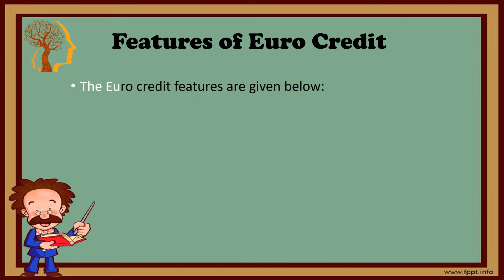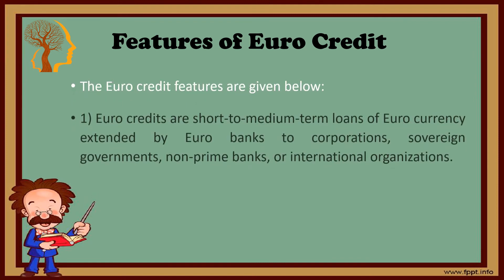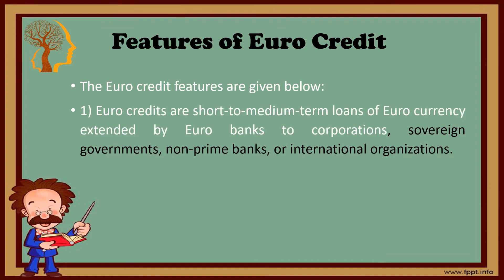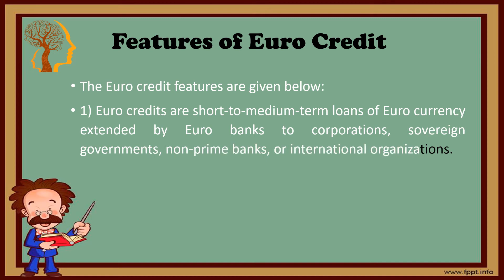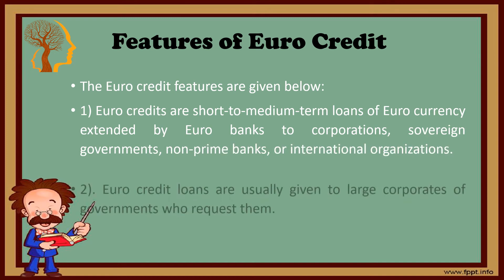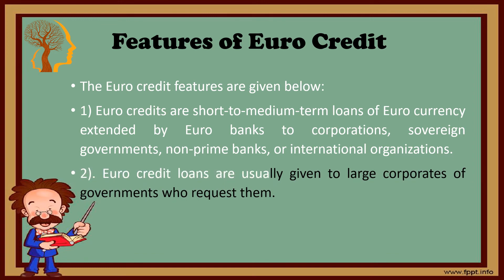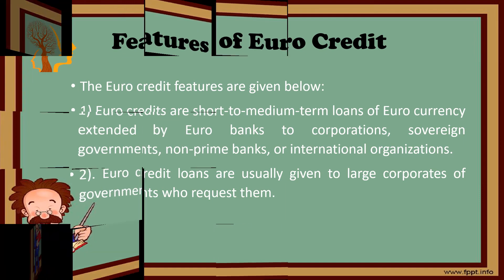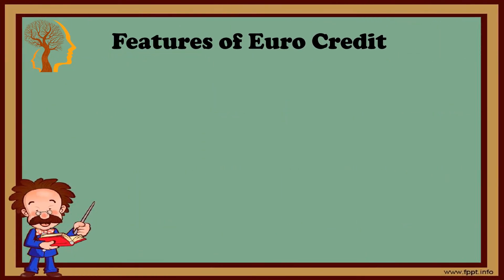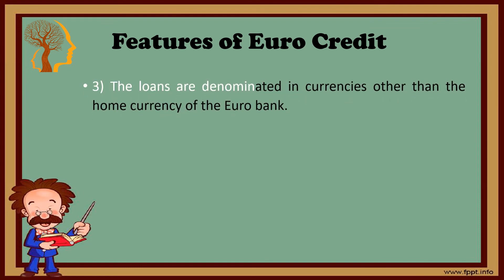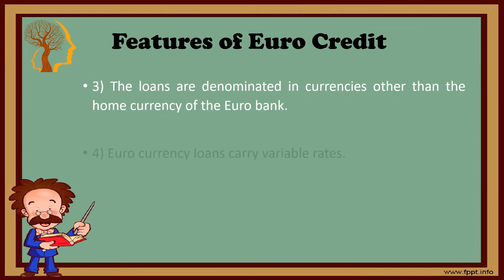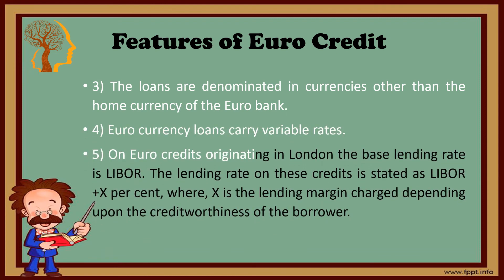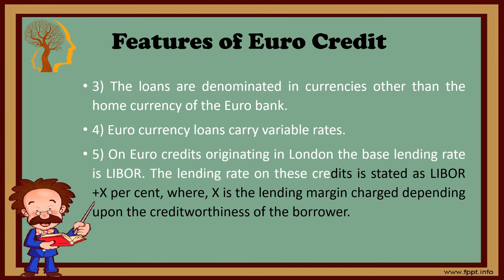Euro credits are short- to medium-term loans of euro currency extended by euro banks to corporations, sovereign governments, non-prime banks, or international organizations. Euro credit loans are usually given to large corporates or governments who request them. The loans are denominated in currencies other than the home currency of the euro bank. Euro credit loans carry variable rates. For euro credits originated in London, the base lending rate is LIBOR.